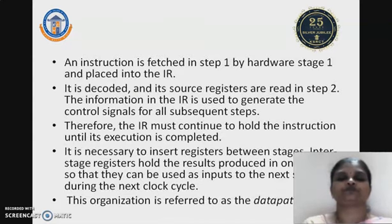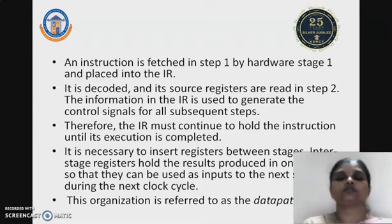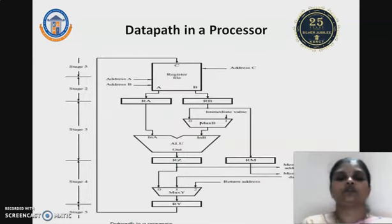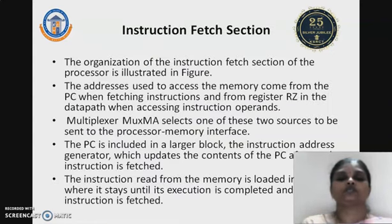Instructions go through fetching, decoding, executing, and forwarding to perform the appropriate functionality. An instruction is fetched in step 1 by hardware stage 1 and placed in the instruction register. It is decoded and source registers are set up to be read in step 2. Information in the instruction register is used to generate control signals for all subsequent steps; therefore, the instruction register must continue to hold the instruction until execution is completed. It is necessary to insert additional registers — RA, RB, and RZ — between successive stages of instruction execution to forward content to successive stages.